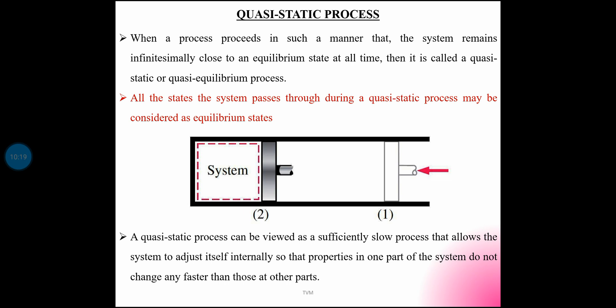Quasi-Static Process: when a process proceeds in such a manner that the system remains infinitesimally close to an equilibrium state at all times, it is called a Quasi-Static or Quasi-Equilibrium Process. All the states the system passes through during a Quasi-Static Process may be considered as equilibrium states.